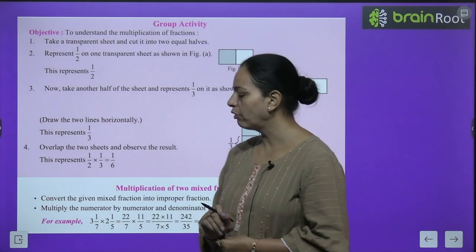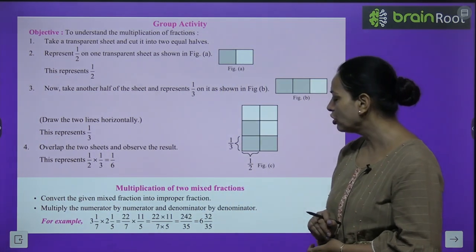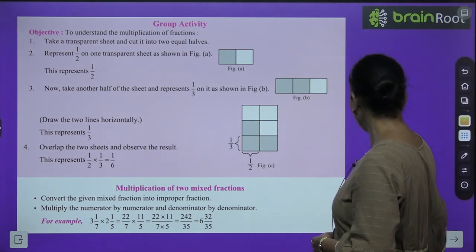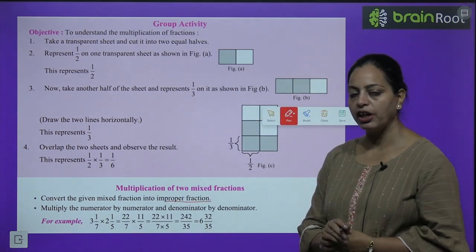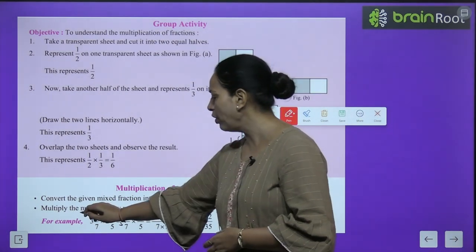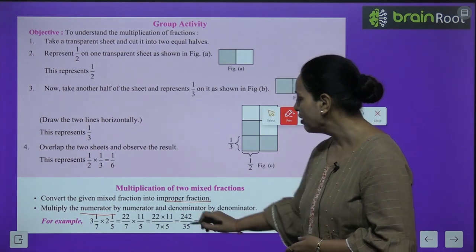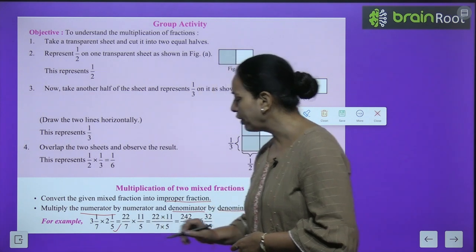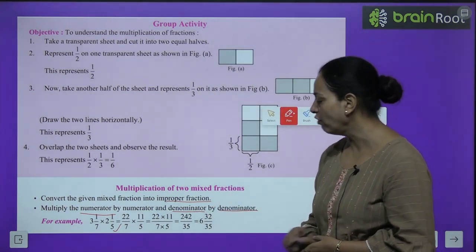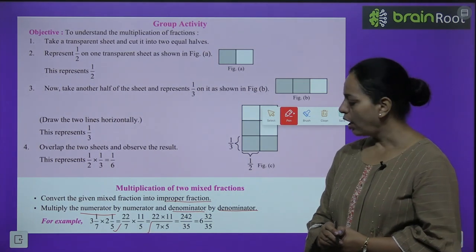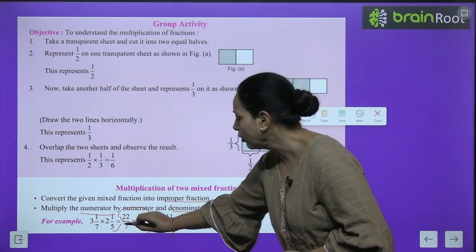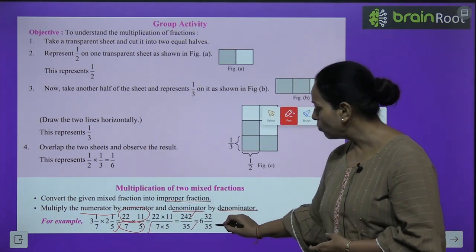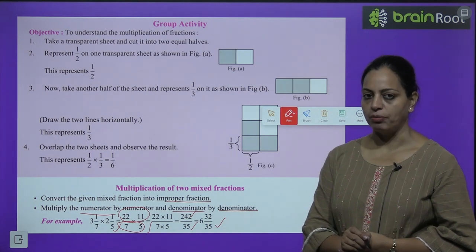Multiplication of two mixed fractions: first convert the mixed fractions to improper fractions, then multiply numerator by numerator and denominator by denominator. Example: 3 whole 1/7 × 2 whole 1/5 → 22/7 × 11/5 = 242/35. You can then change this to a mixed fraction.